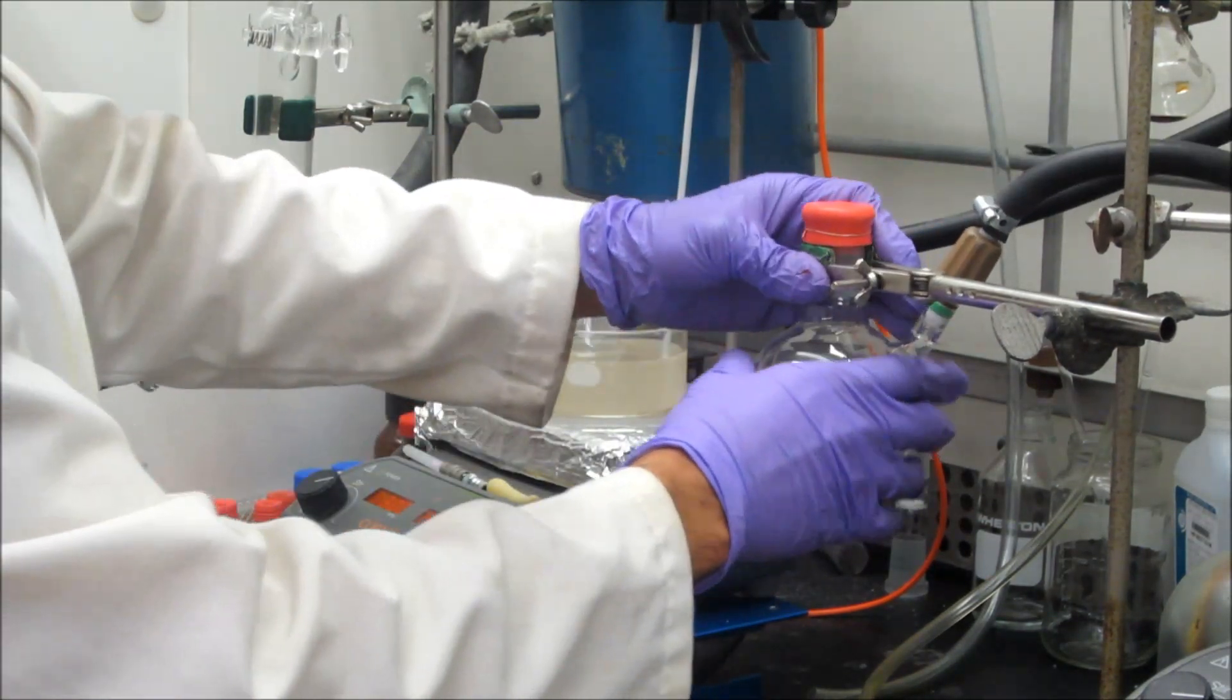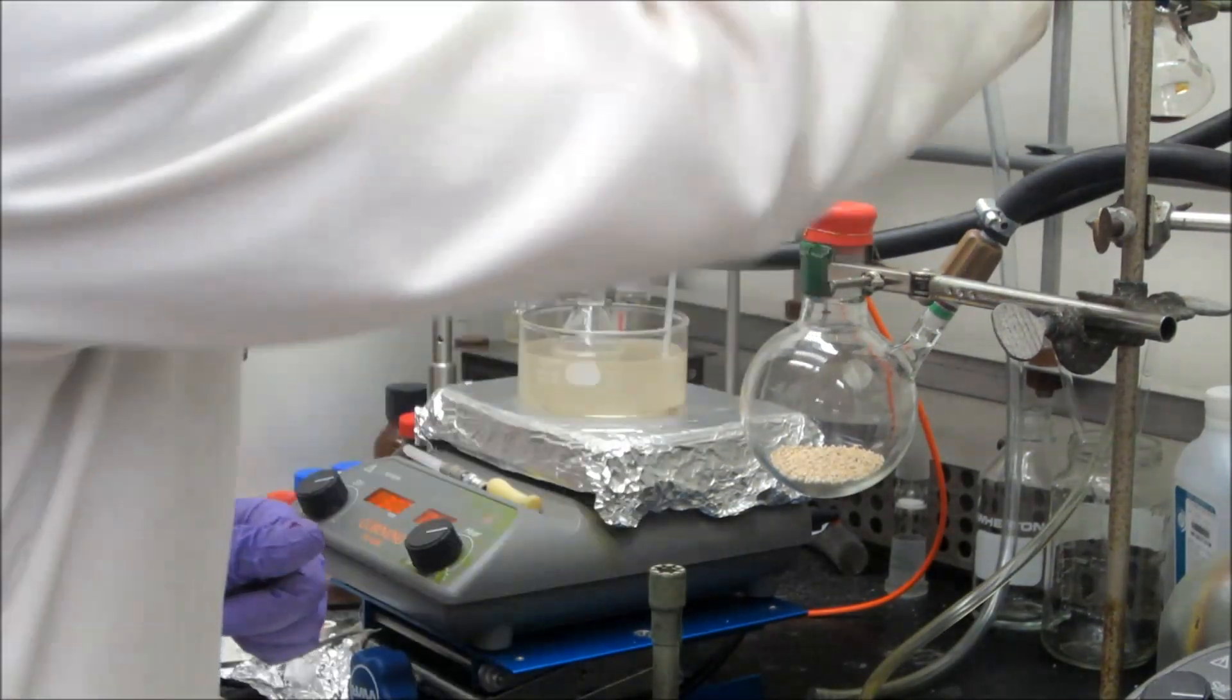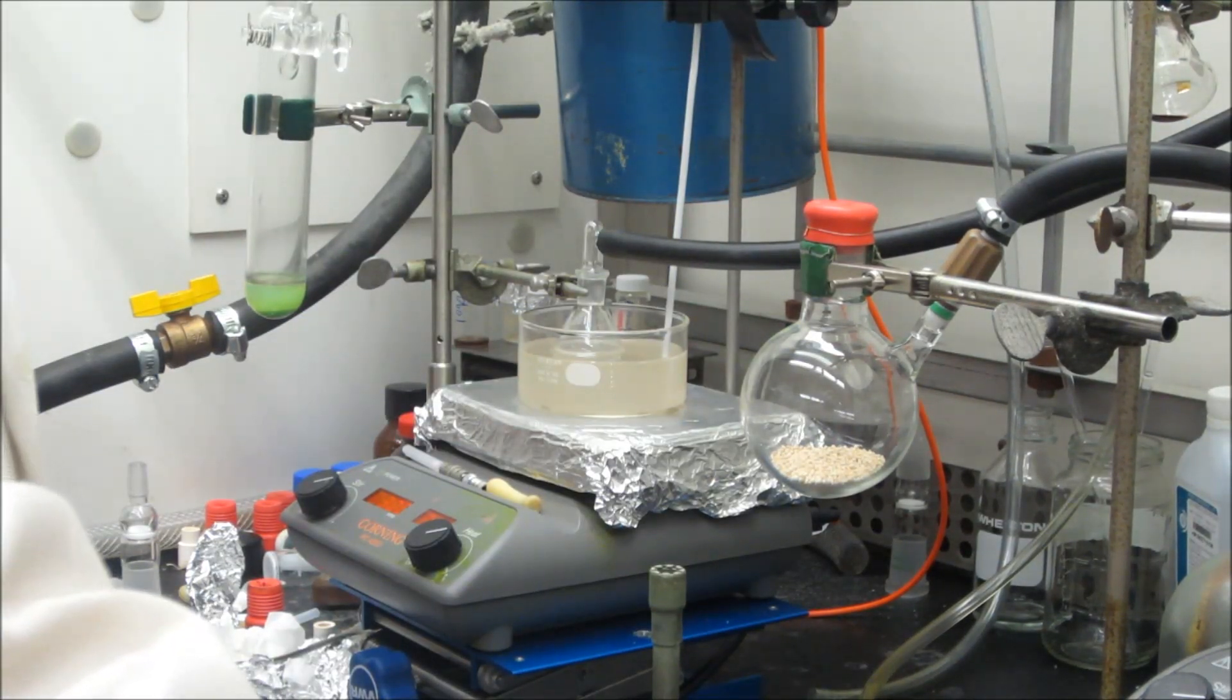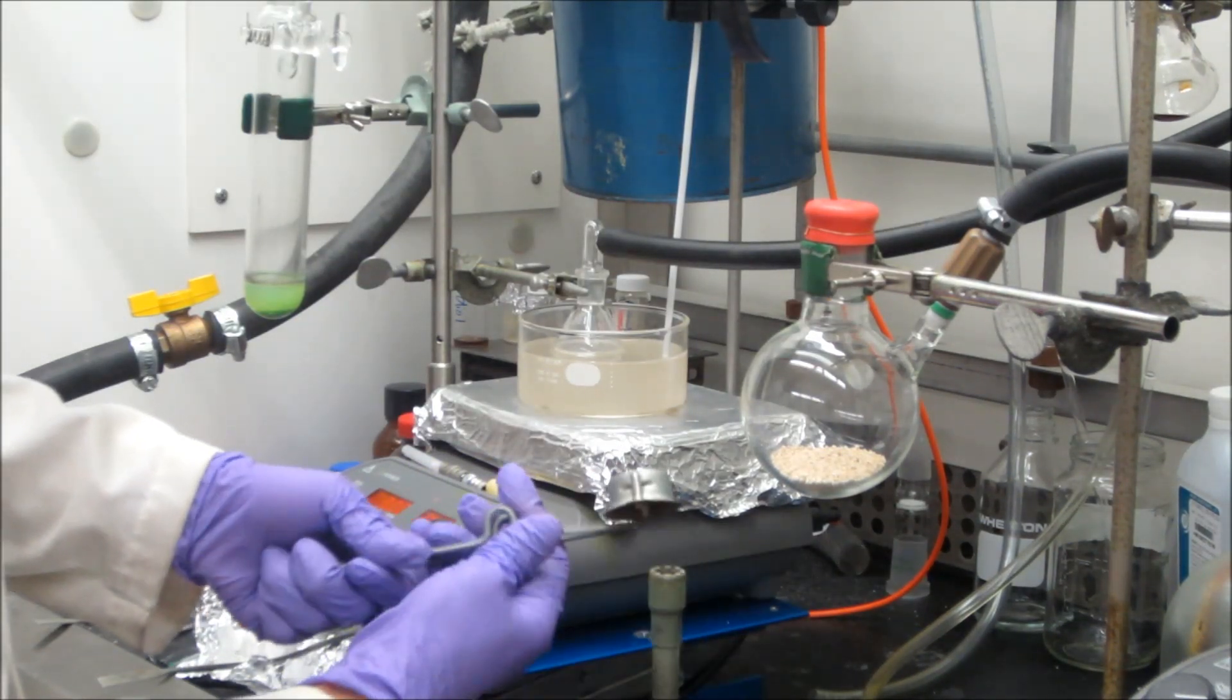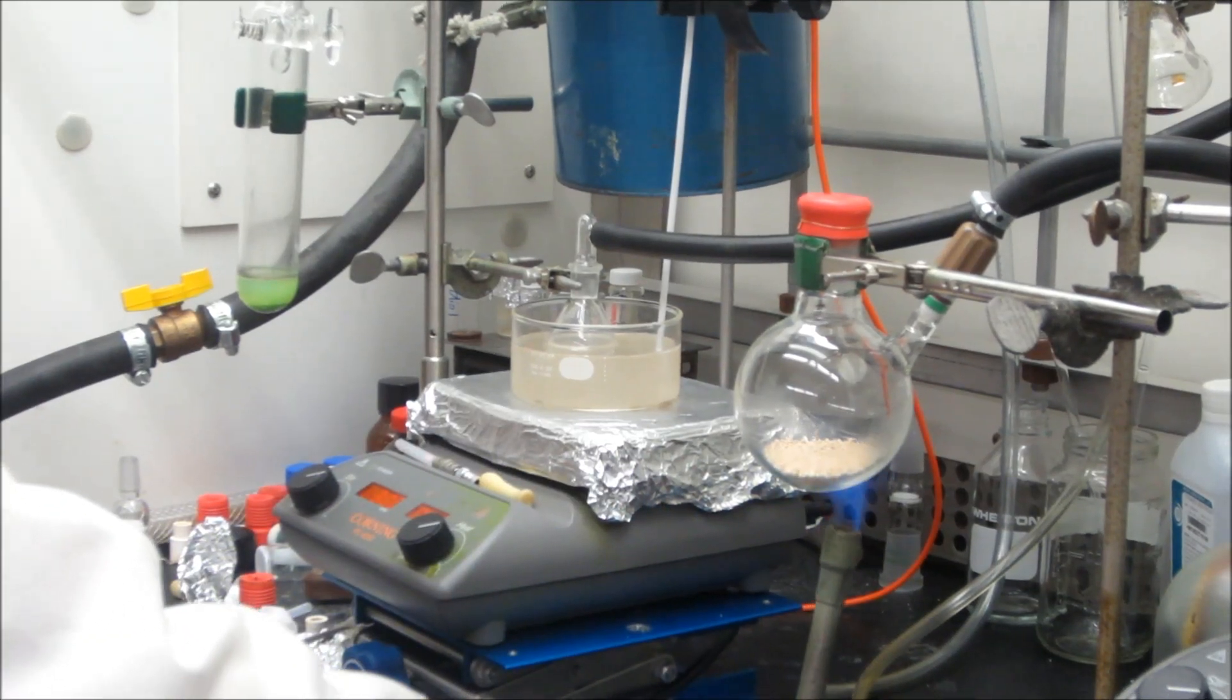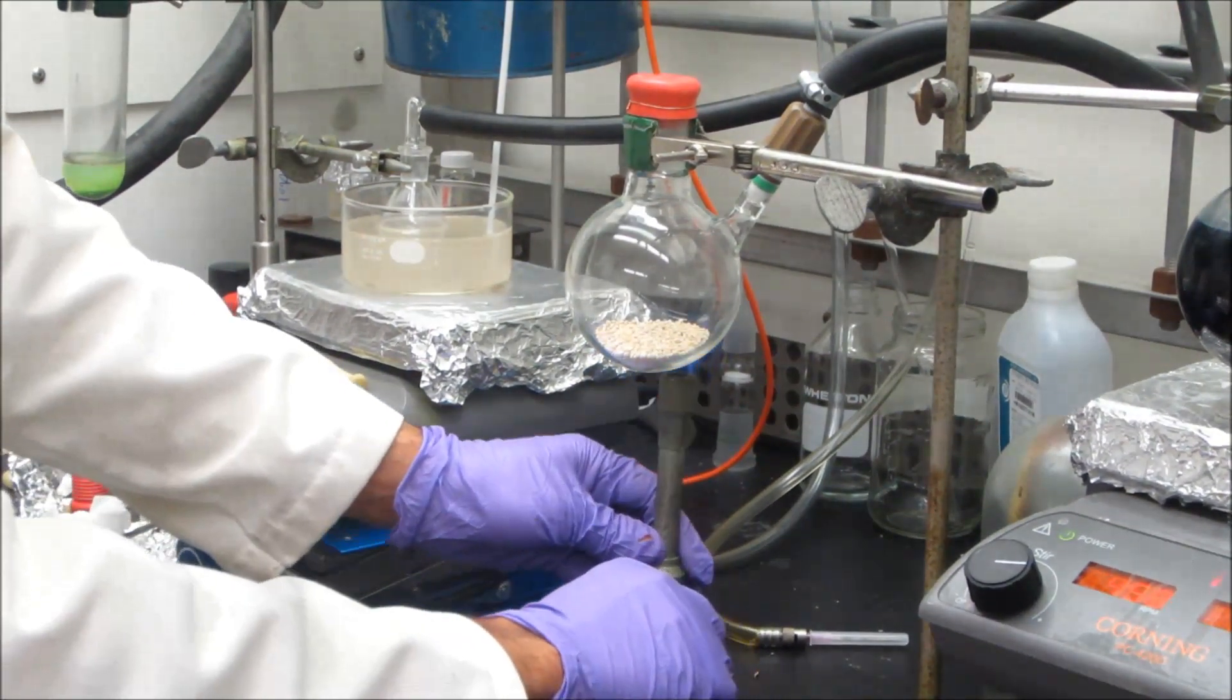And so the first thing that we do is make sure that everything is securely clamped. And then we open the system to nitrogen and we take a Bunsen burner and light the Bunsen burner and heat the bottom of the flask. Basically, anywhere there are sieves, you want to make sure that you heat evenly.